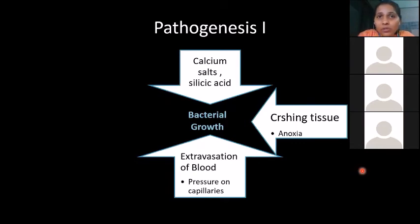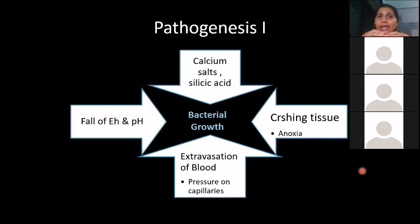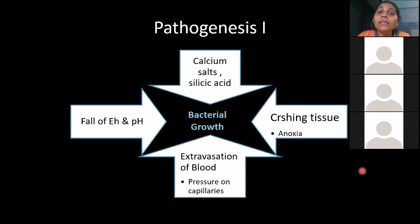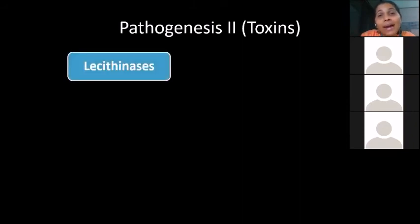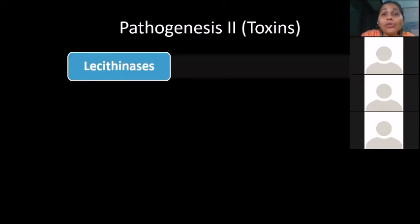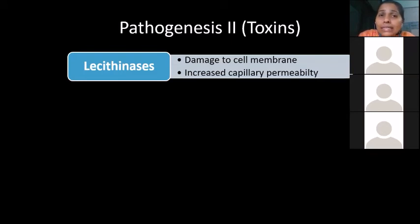Blood seeps from crushed vessels — extravasation of blood — pushing surrounding capillaries aside, causing pressure on the capillary bed and completely cutting off oxygen supply to the site. With oxygen cut off and bacteria growing, they metabolize glucose and proteins anaerobically, causing the pH to drop, and the redox potential (Eh) also drops. Bacteria then start synthesizing different toxins.